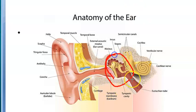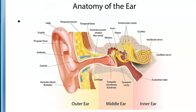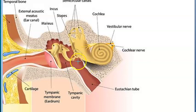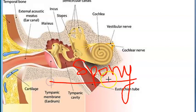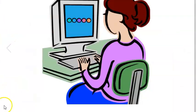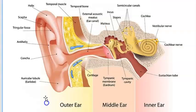What is getting sclerosed is the footplate of the stapes. You can see the stapes marked here. Something is happening to this bone — it is hardening or becoming spongy when it should not, which is why it is called otospongiosis. Overall, this will impair the job of the ossicles, which is to conduct sound.